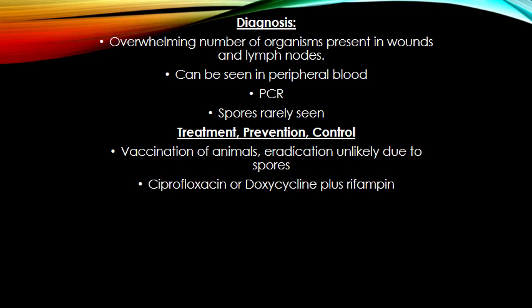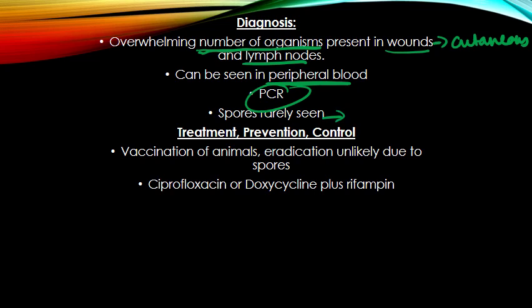Diagnosis of B. anthracis is fairly straightforward because the organism replicates quickly, producing an overwhelming number of organisms wherever you look — in the wound for cutaneous cases, in lymph nodes, or in peripheral blood if the patient is bacteremic. PCR is also an option. You're almost never going to see spores because the nutrient-rich environment means the organism is not undergoing sporulation.